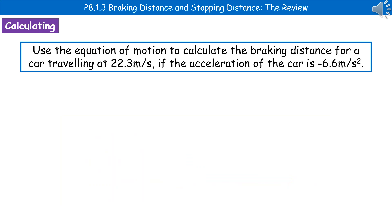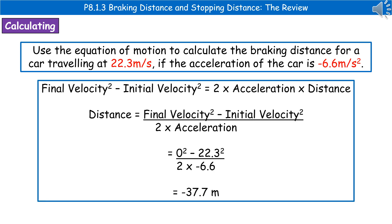A calculation question might ask you to use an equation of motion to calculate the braking distance for a car travelling at 22.3 metres per second if the acceleration is minus 6.6 metres per second squared. First, highlight or jot down the important information. Then use the equation of motion: final velocity squared minus initial velocity squared equals 2 times acceleration times distance. Rearrange to get: distance equals (final velocity squared minus initial velocity squared) divided by (2 times acceleration).